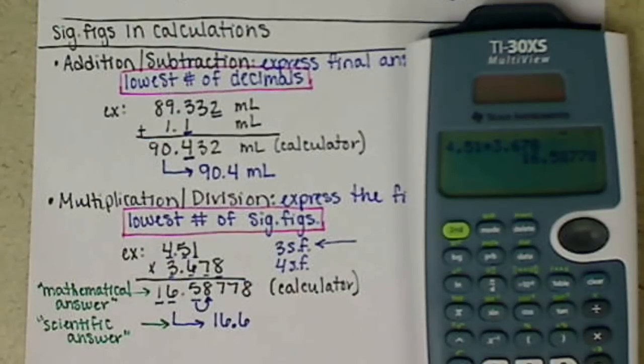So that wraps up our sig figs and calculations. Feel free to work on your questions and problems in section 1.6 of your book, as well as there are some questions to help and hints on the Sapling Learning site.